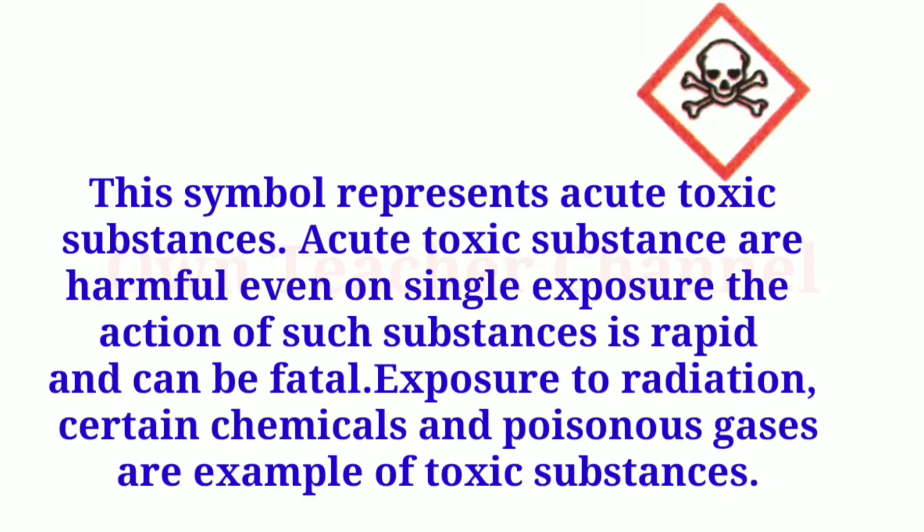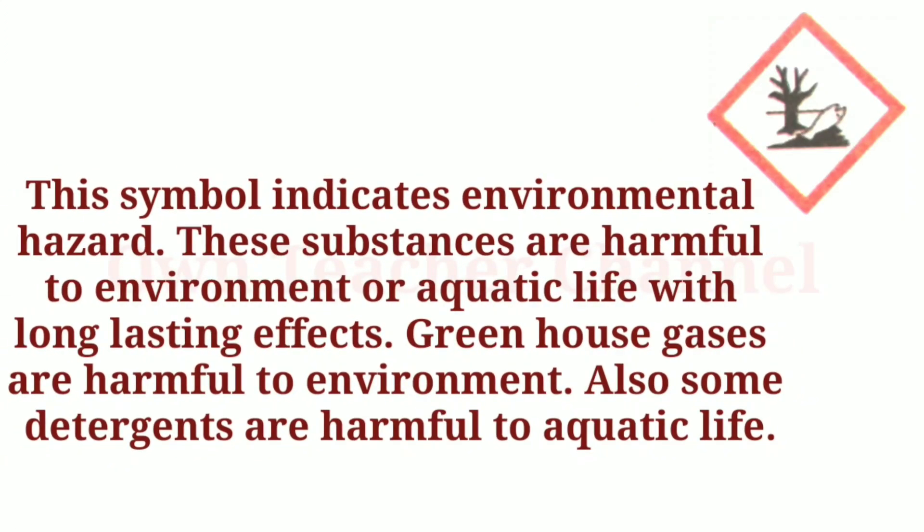The next symbol represents acute toxic substances. Acutely toxic substances are harmful even on single exposure; their action is rapid and can be fatal. Exposure to radiation, certain chemicals, and poisonous gases are examples of toxic substances. Another symbol indicates environmental hazard — these substances are harmful to the environment or aquatic life with long-lasting effects. Greenhouse gases and some detergents are harmful examples.